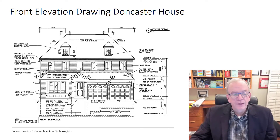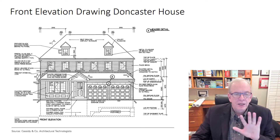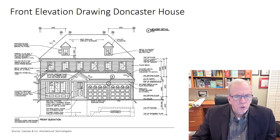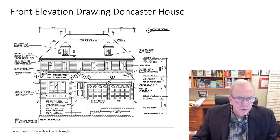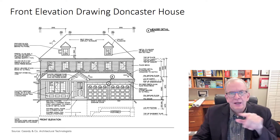This is the front elevation of the Doncaster house. On the front elevation we can see a lot of bits of information. These drawings are in metric, so if you're imperial-oriented, keep in mind I'll be using some imperial drawings coming up as well. The metric dimensions here are in millimeters — so instead of 2,995 millimeters, it might say something like 9 foot 6 inches in imperial. Everything else is the same.